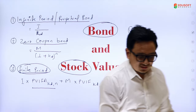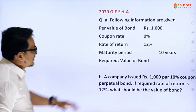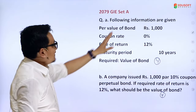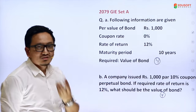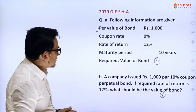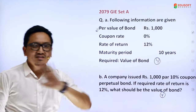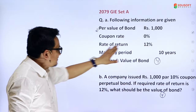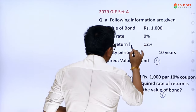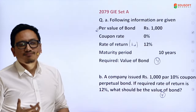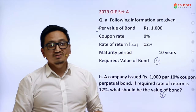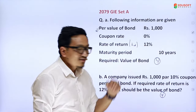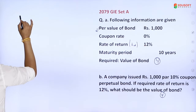Question 1 — from 1979. The following information is given: par value of bond is 100 rupees. Coupon rate is 0% — that means it is a zero coupon bond. The rate of return, that is kd, is the expected return. Maturity period is 10 years.